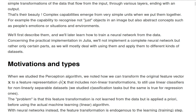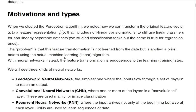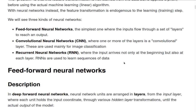However, the problem is that this transformation from x to phi(x) — this feature transformation — is not learned from the data. It is us who apply it a priori, before actually using the machine learning algorithm. The key advantage of neural networks is that this feature transformation is endogenous to the learning step — it is learned during the training of the algorithm.